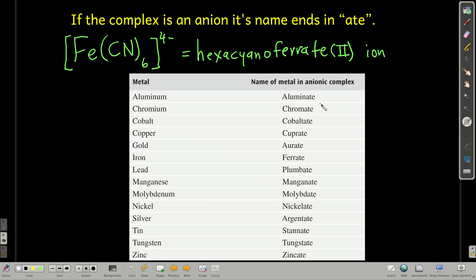These are the names of some of the metals in anionic complexes, ending in A-T, so aluminate, chromate, cobaltate. But we use the older names for some of these metals, like cuprate for copper and aurate for gold and ferrate for iron, plumbate for lead, manganate, molybdate, niccolate, argentate for silver, stannate for tin, tungstate, and zincate.